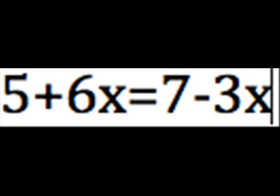Our equation is 5 plus 6x equals 7 minus 3x. So what you have to do is collect the like terms.